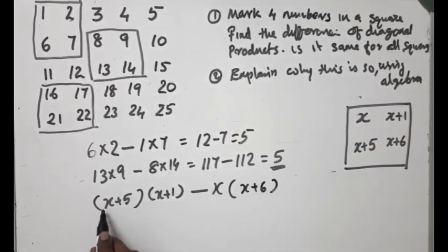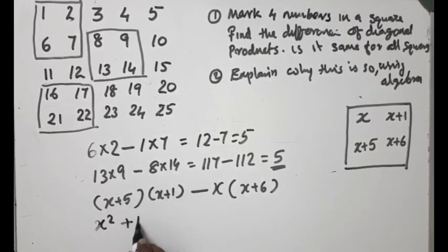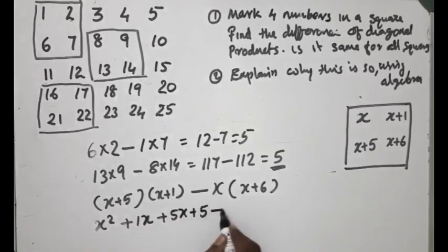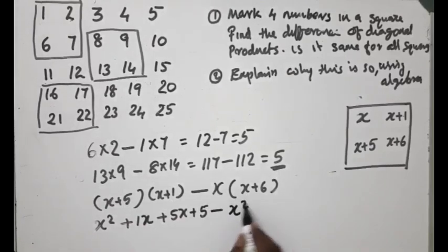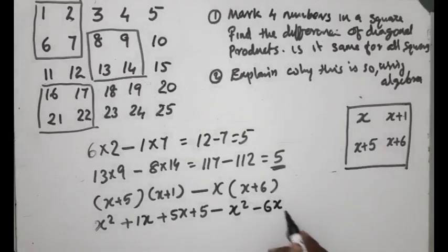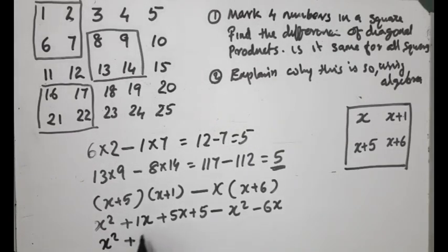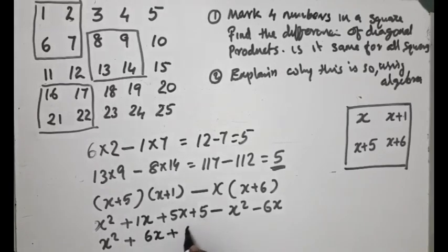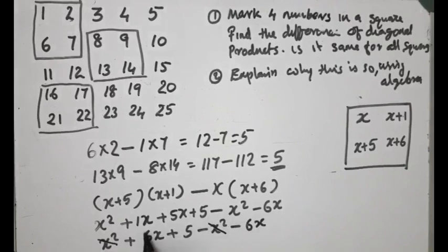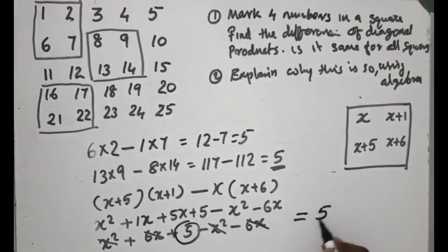Now we will explain how x into x gives x squared, x into 1 gives 1x, 5 into x gives 5x — minus x into x gives minus x squared, minus x into 6 gives minus 6x. Then 6x minus 6x minus 6x gives 5x minus 5. And here our algebra result is 5.